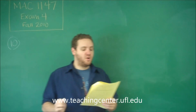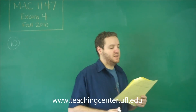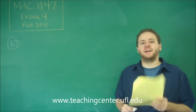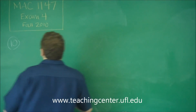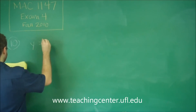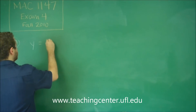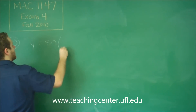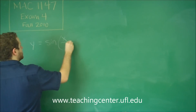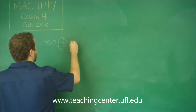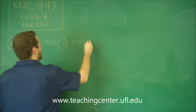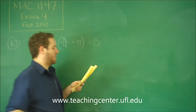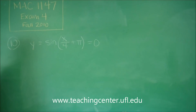For number 10, we're supposed to find all the x-intercepts of a function. Remember that the x-intercepts are when y is equal to 0. So our function here is y equals sine of x over 4 plus pi, and we want this entire function to equal 0.